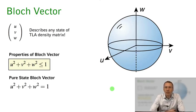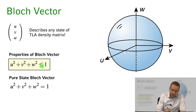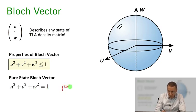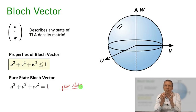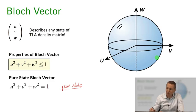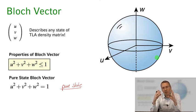We found that we can decompose the density matrix of our two-level atom in the rotating frame of light in terms of three real variables u, v, and w that describe any state of the system. The Bloch vector has the property that its length is restricted to be smaller than or equal to 1: u-squared plus v-squared plus w-squared is always less than or equal to 1. If u-squared plus v-squared plus w-squared equals 1, the system is in a pure state. If it is smaller than 1, the system is in a mixed state.